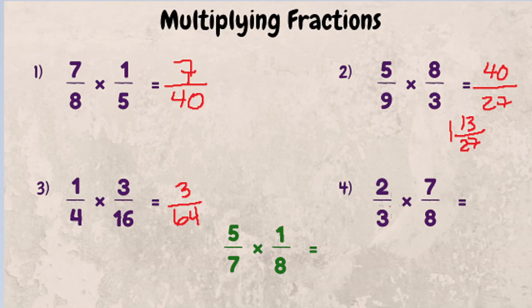Fourth example. 2 thirds times 7 eighths. 2 times 7 is 14. 3 times 8 is 24. We can look at these numbers and see 14 and 24 are both even numbers, so we know they can be divided by 2. Let's divide by 2 to simplify our answer. And we get 7 over 12.